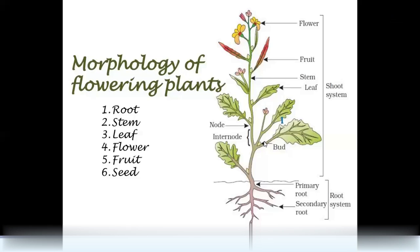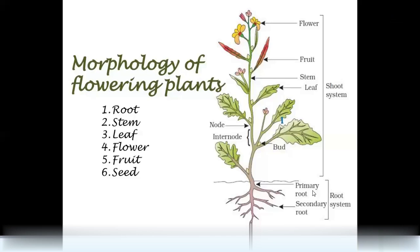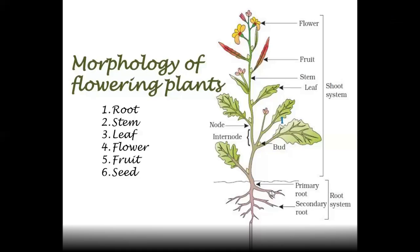The next part is the root system. The first formed root is the primary root. The primary root gives rise to secondary roots. This is the overall structure of flowering plants — angiosperms.